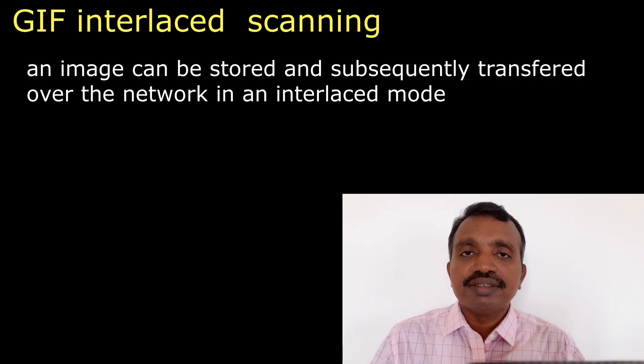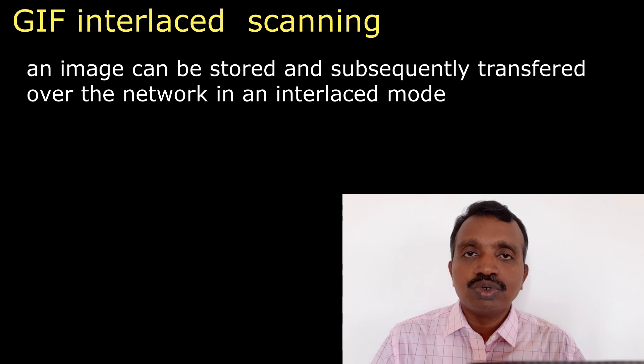In interlaced scanning, the scanning of lines does not take place continuously. For GIF interlaced scanning, the entire compressed image is divided into 4 groups.